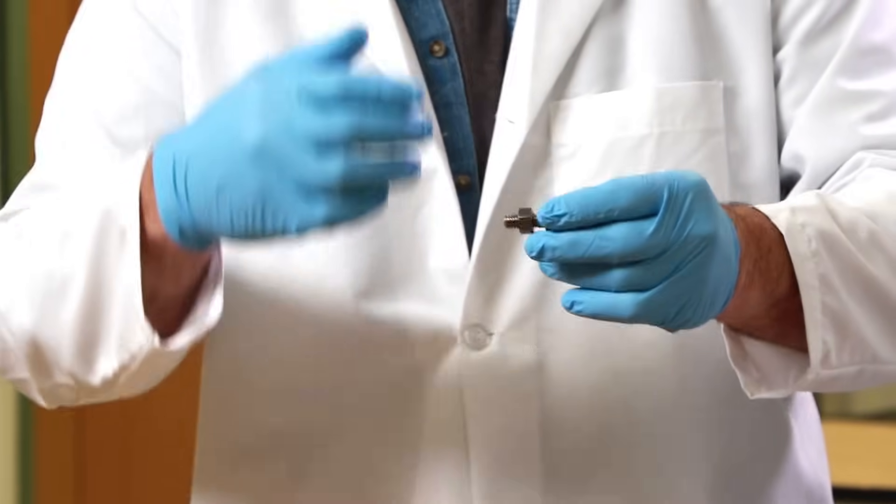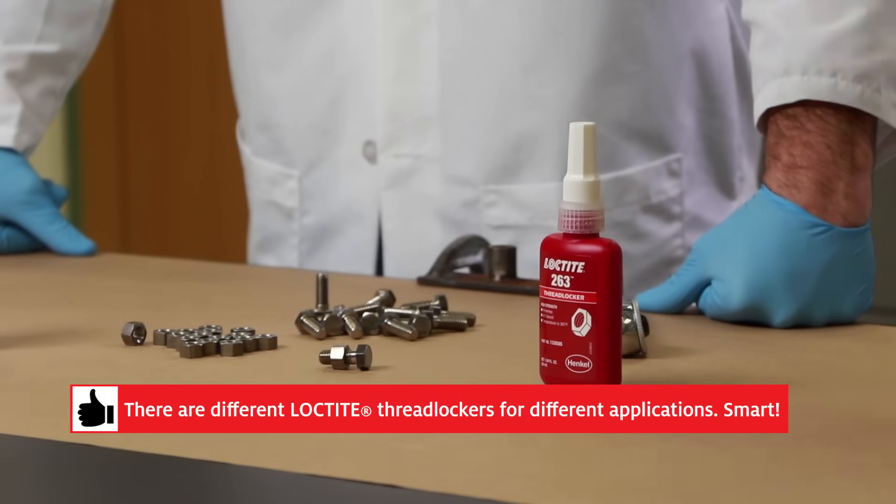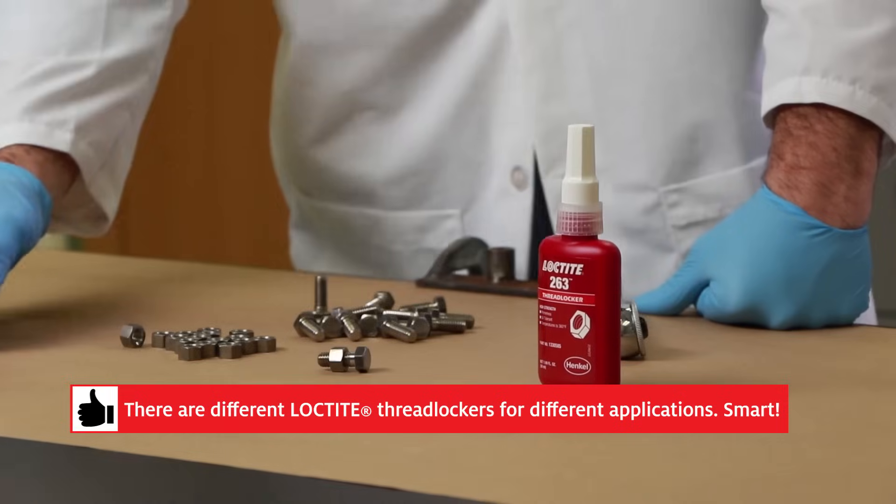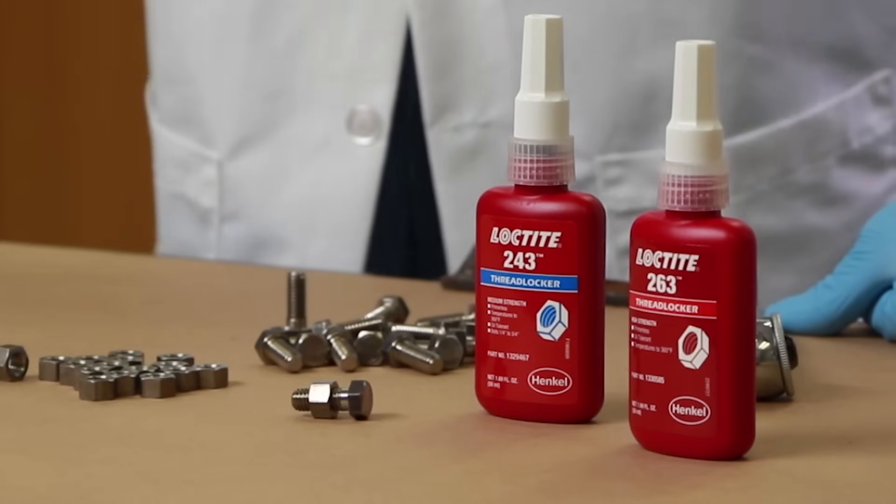All right. So we got it together. It's been sitting there for four or five years. So how do I get it apart? It's all rusted. For a blue product, the 243, all you need to do is use regular hand tools in order to get it apart. Really? You want to try it out?